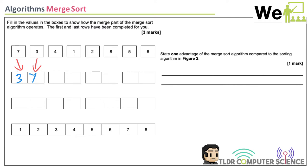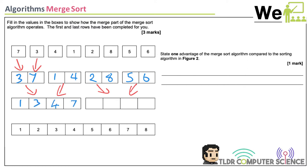Now these pairs come together. Comparing one, three, four, seven — pointers move through: one goes in, then three, then four, then seven. For two, five, six, eight: two, five, six, eight. That's three marks for the merge demonstration — some of the easiest three marks in the entire exam.